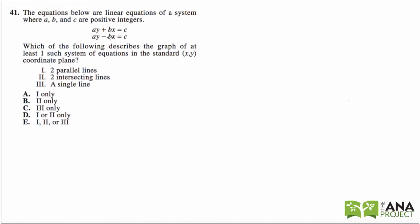This may seem a little bit obscure: ay + bx = c, ay - bx = c. So let's just say a equals 1, b equals 2, and c equals 3. I'm using 1 for a because I want to put it into y = mx + b form.